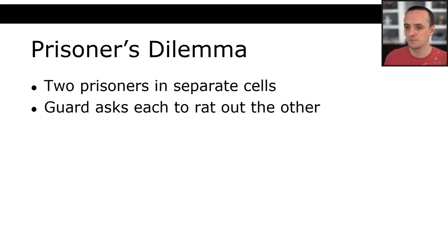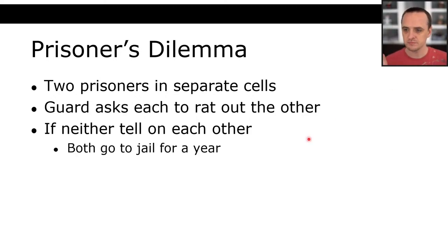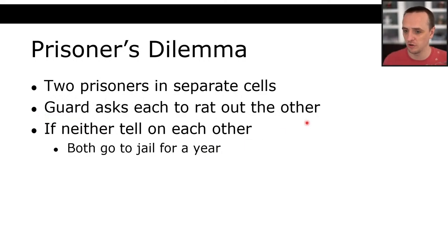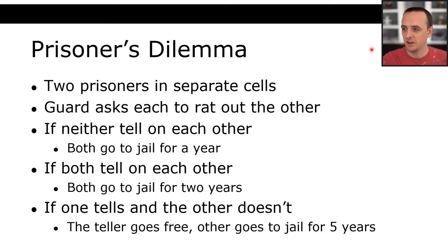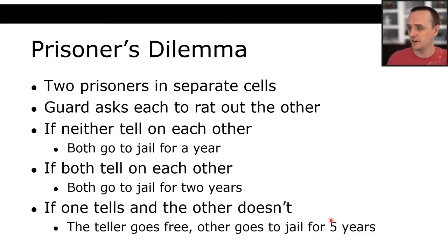However, there's an important note when applying game theory: the payoffs must accurately reflect your actual utility. For example, your decision might differ between a million dollars and a hundred dollars at stake. Also, a million dollars might not be twice as valuable as $500,000 to you — $500,000 might already let you accomplish everything you want. And if you care about the other person, you might value splitting higher because both of you walk away happy. Only steal if those payoffs truly match your utility.